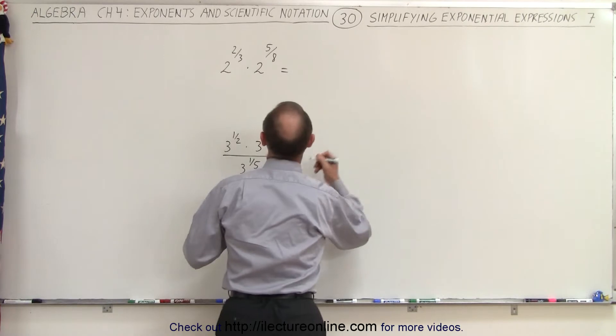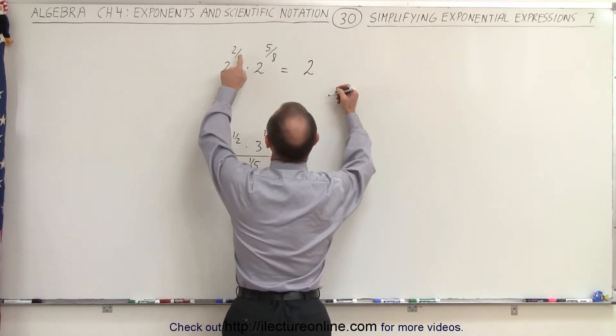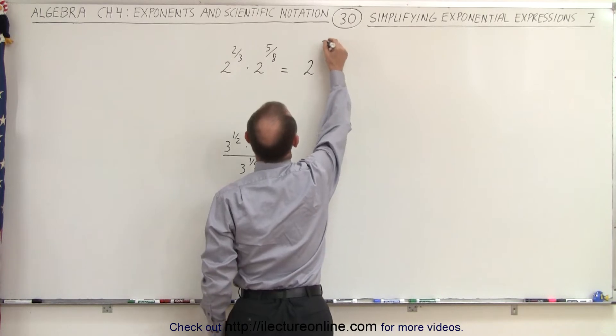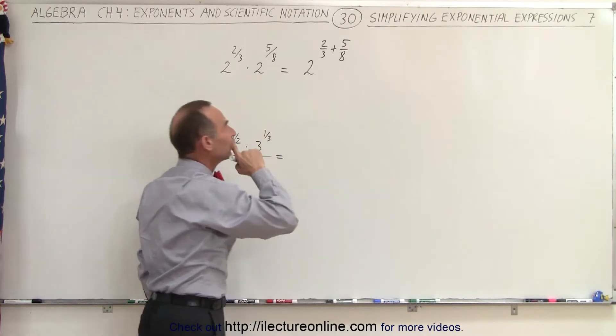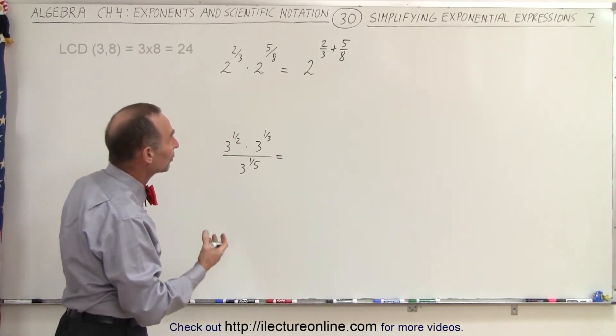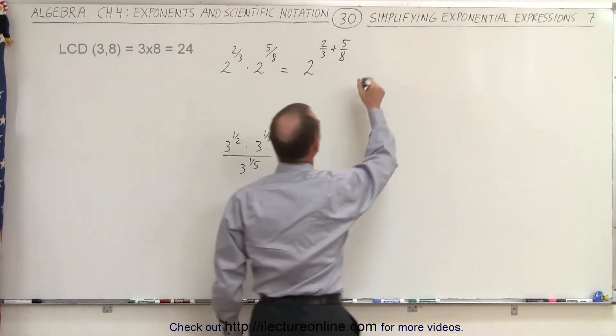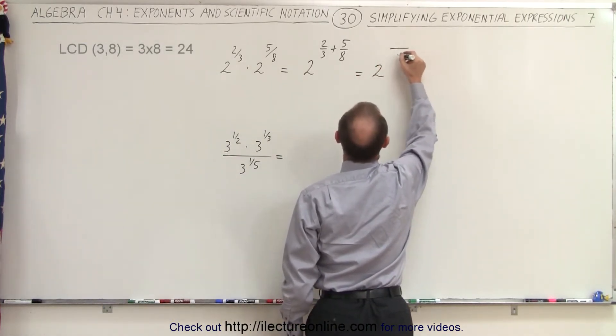On the top problem, for example, we take 2 and since the bases are the same, we're going to add exponents. So we have 2 to the 2/3 power plus 5/8 power. And what is the lowest common denominator in this case? It is the product of the two denominators, so this is equal to 2 to something over 24.